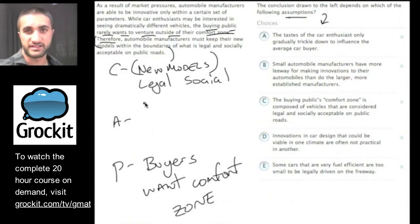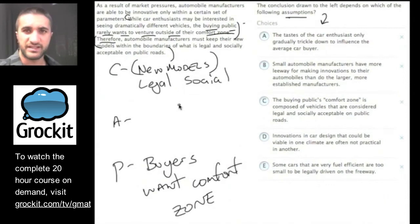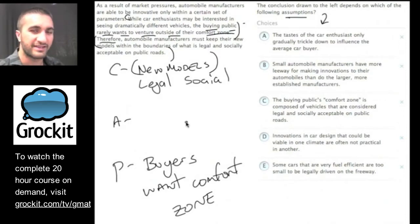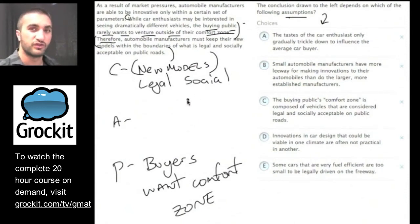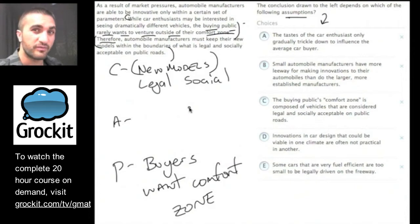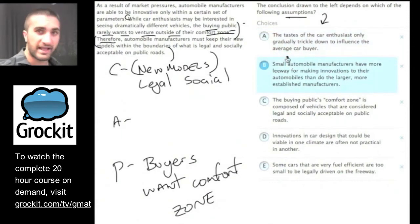The assumption is unstated, so I can't point to it like the conclusion and premise. I probably won't come up with the exact wording of the answer choice. Let's leave the assumption for now and look at the answer choices. Apply our two rules: one, must this be true for the argument to make sense? And two, look out for answer choices that combine language from the conclusion and the premise, since assumptions often link them.